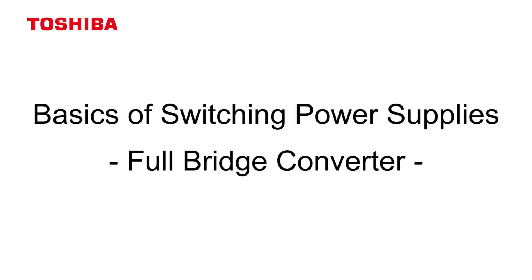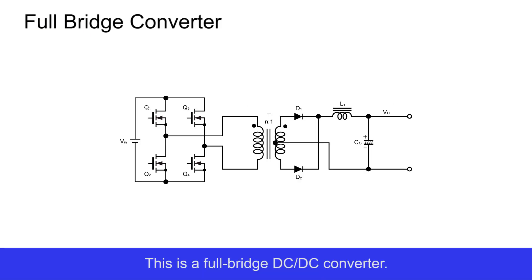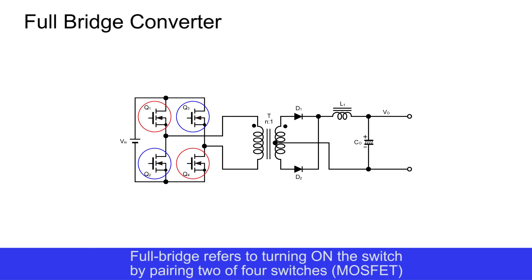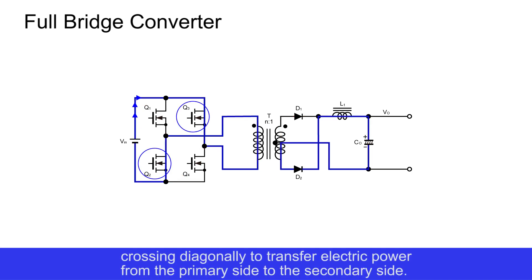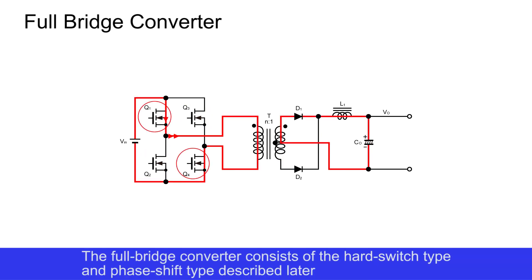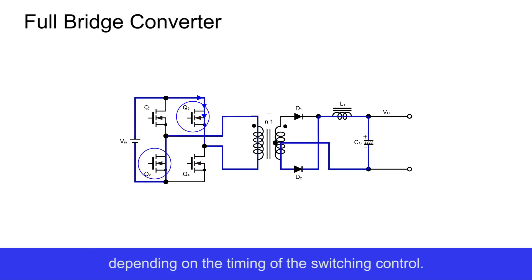This is a full bridge DC-DC converter. Full bridge refers to turning on switches by pairing two of four MOSFETs crossing diagonally to transfer electric power from the primary side to the secondary side. The full bridge converter consists of the hard switch type and phase shift type, depending on the timing of the switching control.